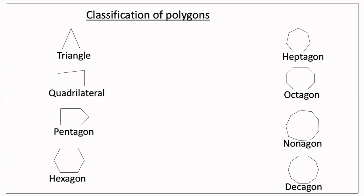Next is pentagon — penta means five, so five sides and five angles are there. Next is hexagon — hexa means six, so six sides and six angles. Next is heptagon — hepta means seven, so seven sides and seven angles. And in octagon — octa means eight, so eight sides and eight angles.